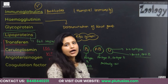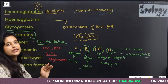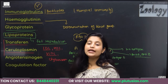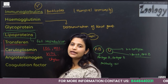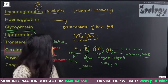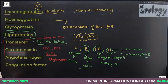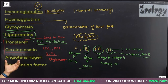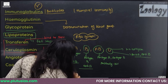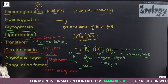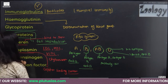Transferrin and ceruloplasmin are both protein-binding proteins. Transferrin binds to iron and transports it throughout the blood. Ceruloplasmin is the copper-binding protein; it binds to copper and transports it throughout the blood. Copper plays an important role in maintaining energy and providing strength to bones.